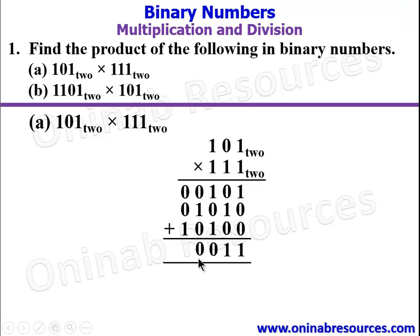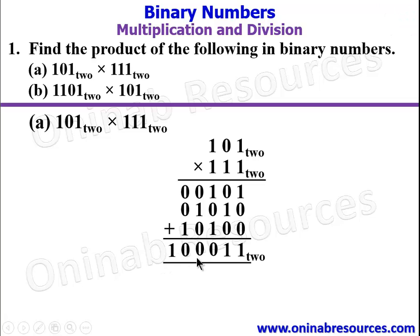Again, we write 0 and carry 1. That 1 plus this 1 gives 2. We write 0 again and carry the 1 over. So 101 base 2 times 111 base 2 gives 100011 base 2. And that's all for problem 1a.